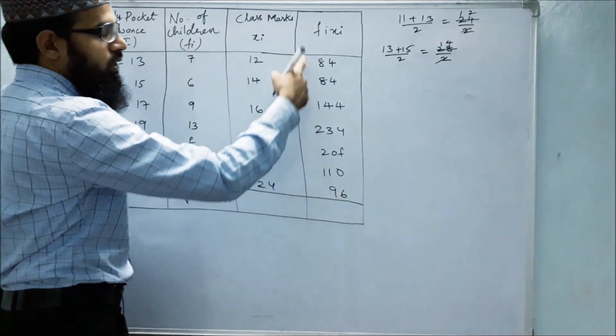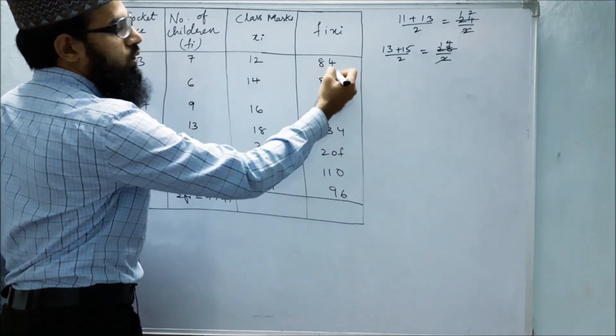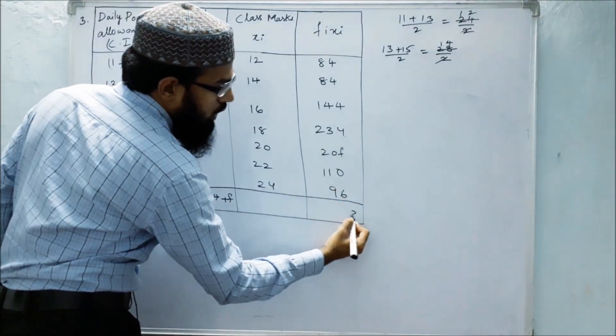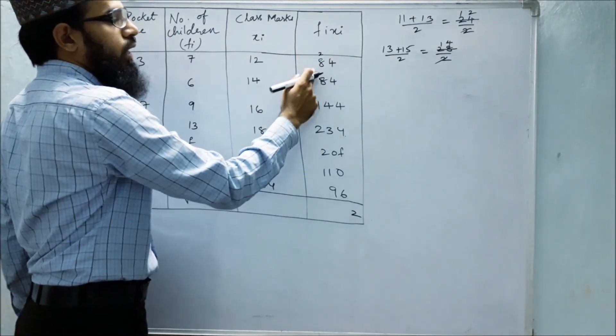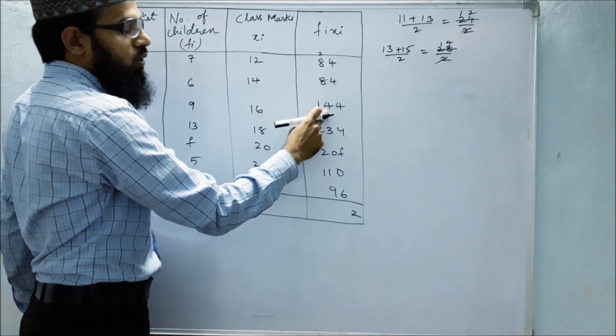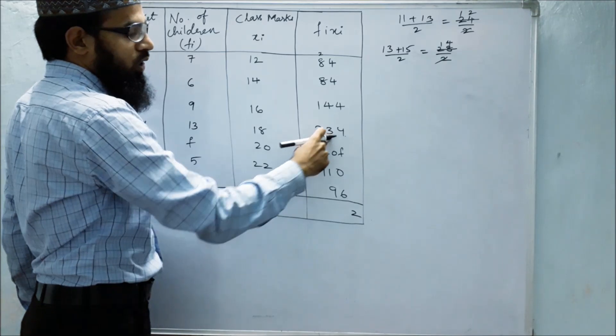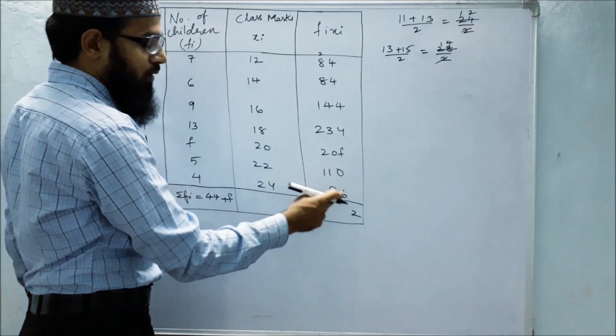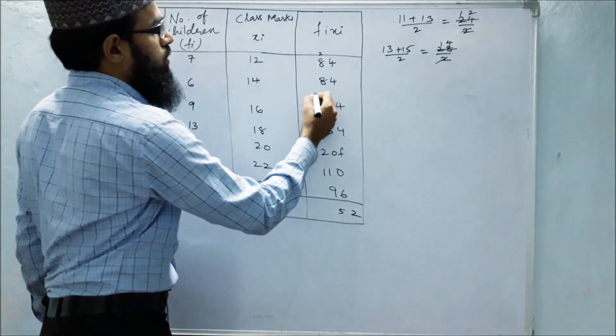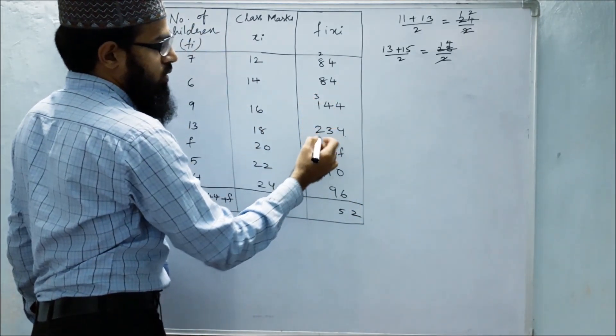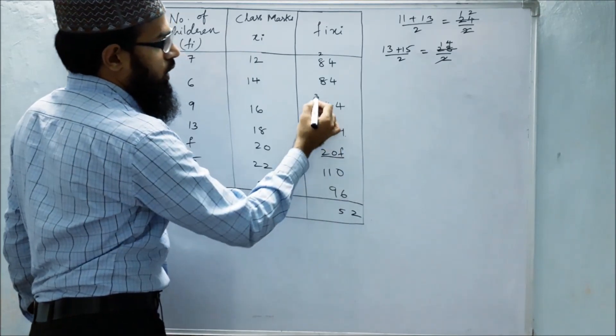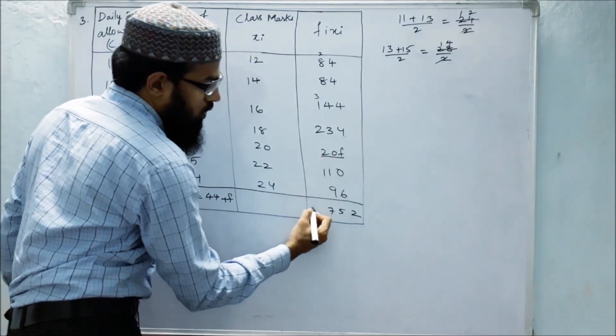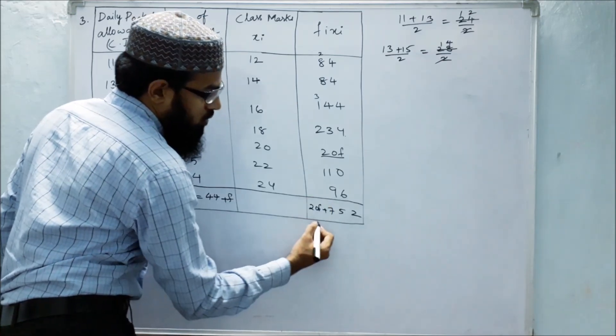Let's add this column except 20f. 84 plus 110 plus 96, adding everything we get 752. And 20f also is there, so 20f plus 752. This is called the summation fixi. We know that the formula for direct method for finding mean is x̄ equals summation fixi by summation fi.